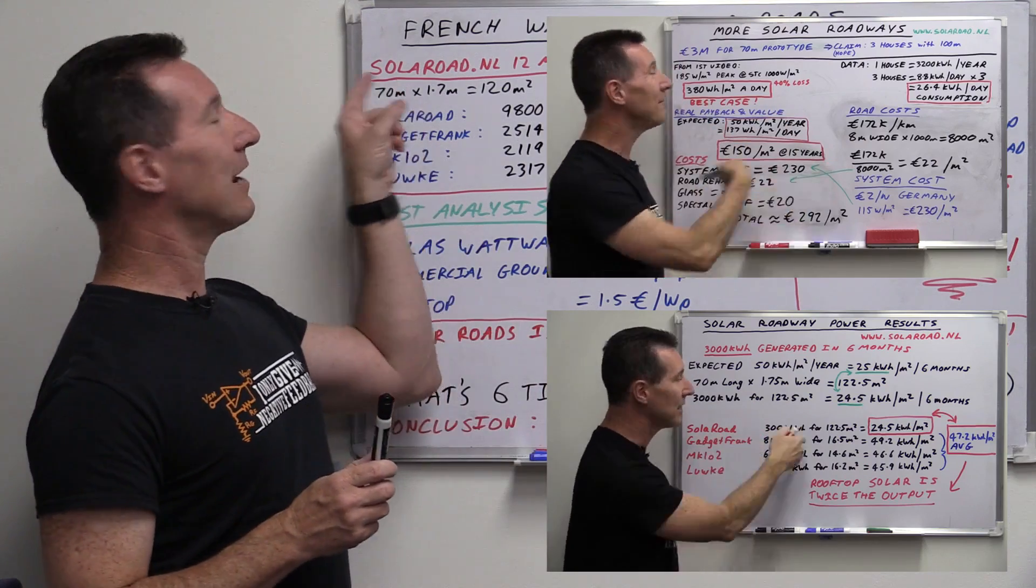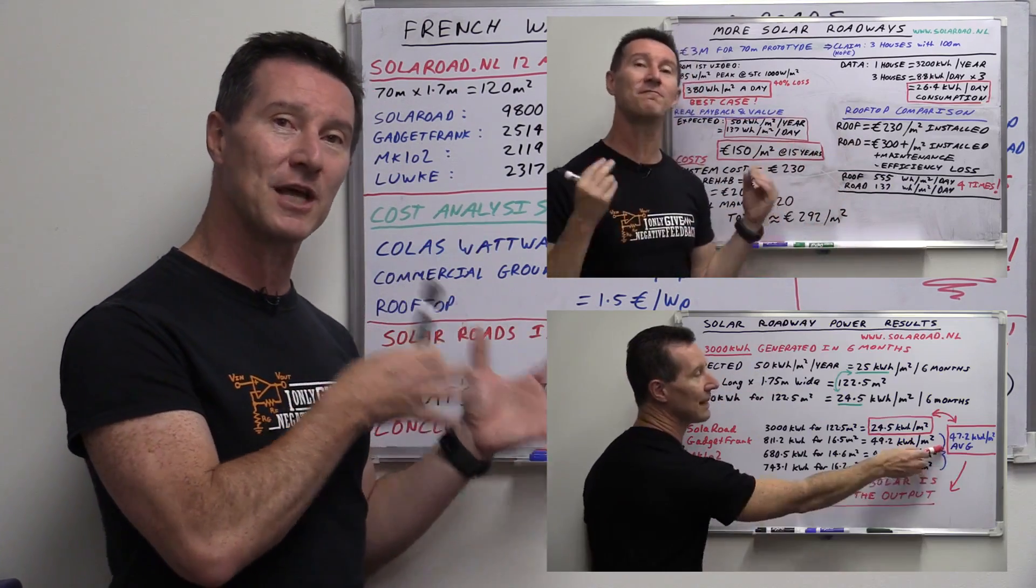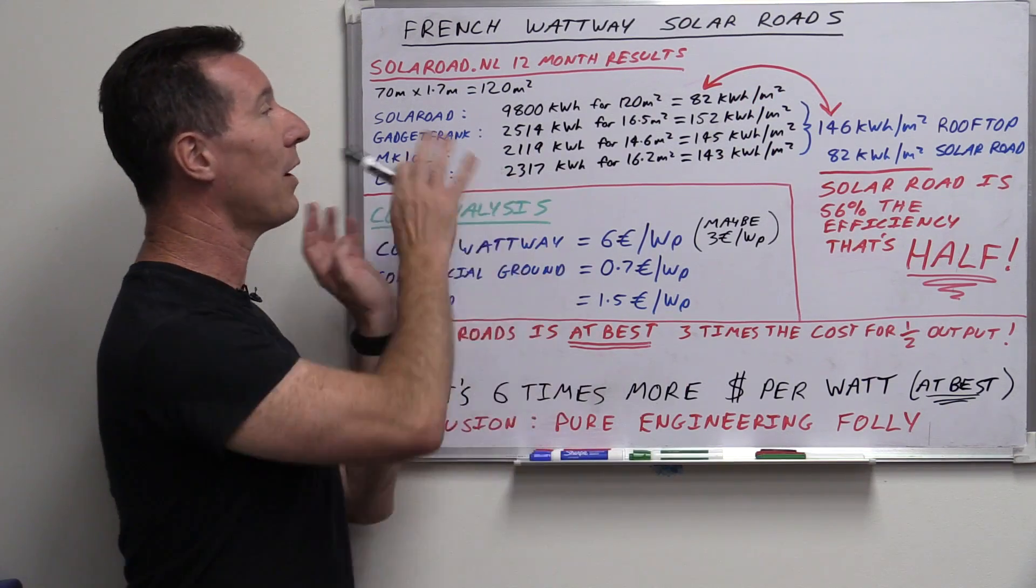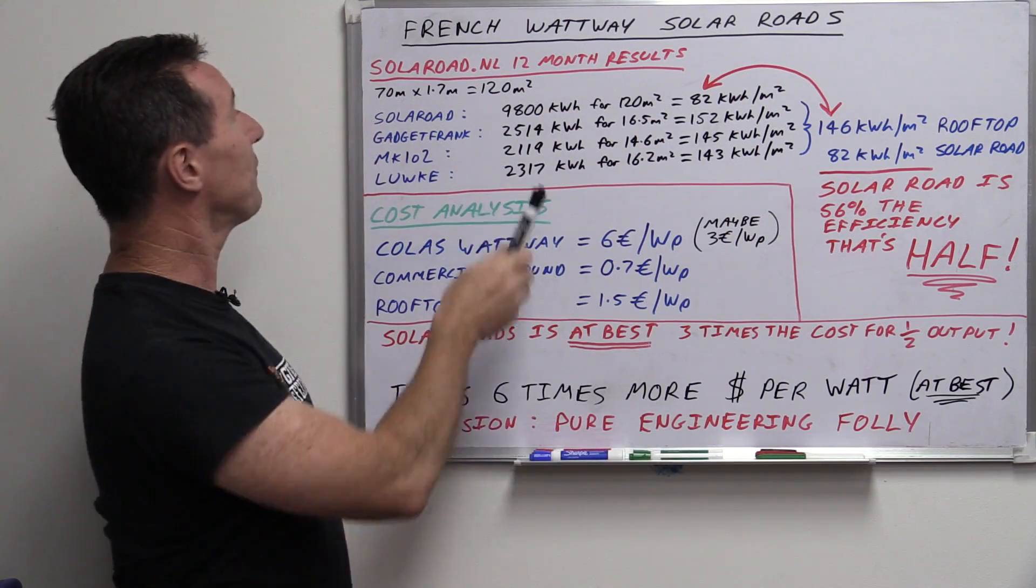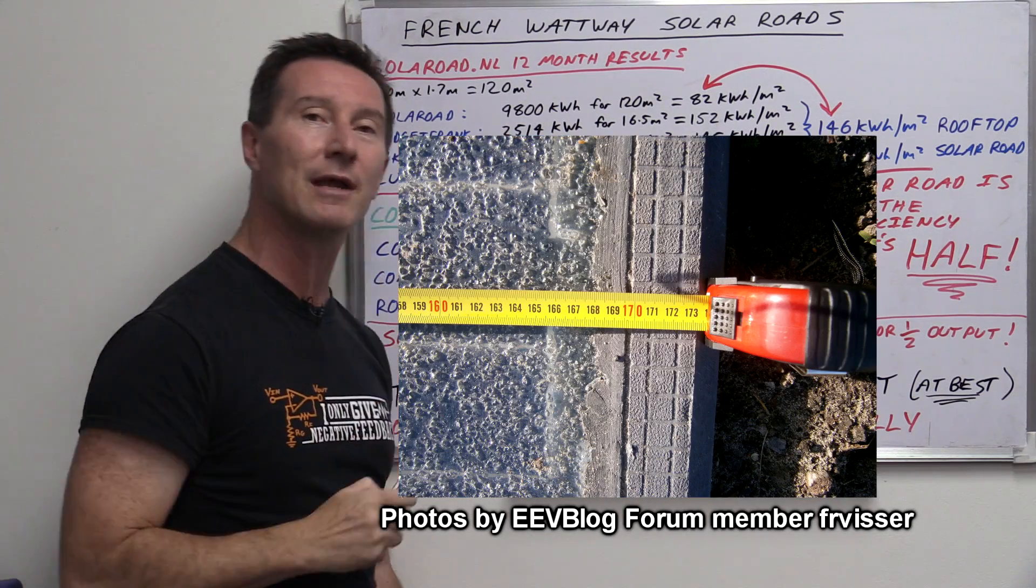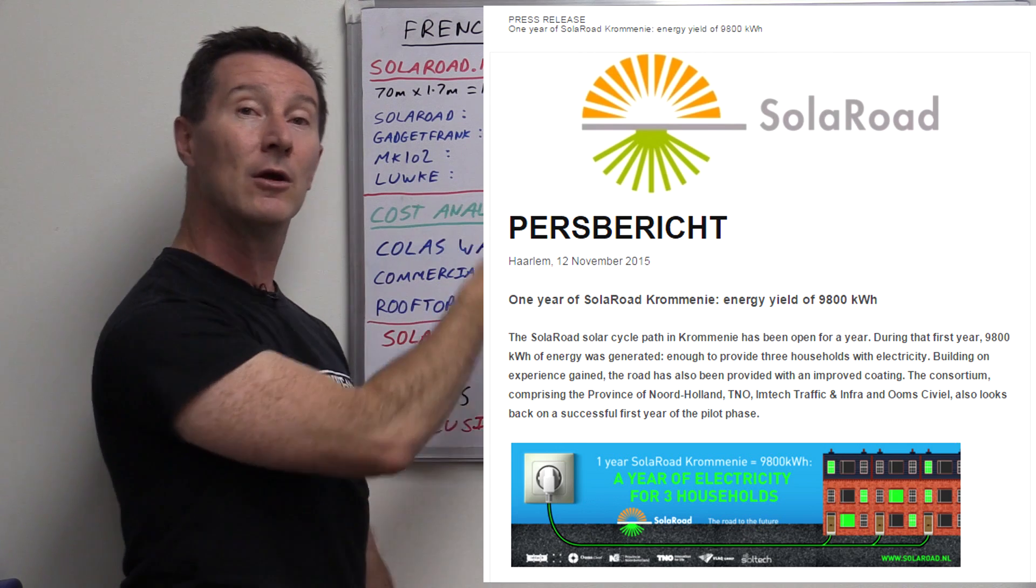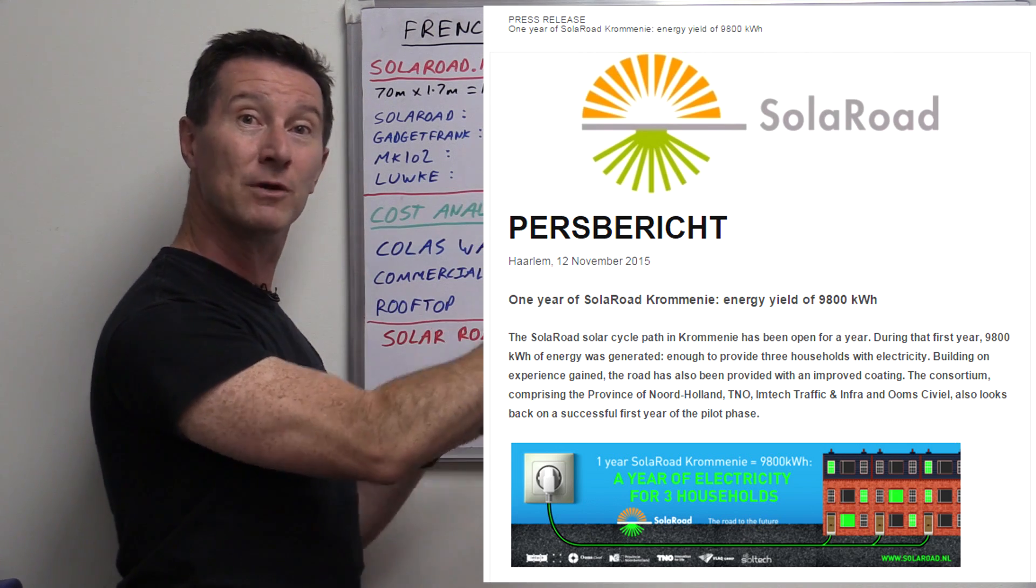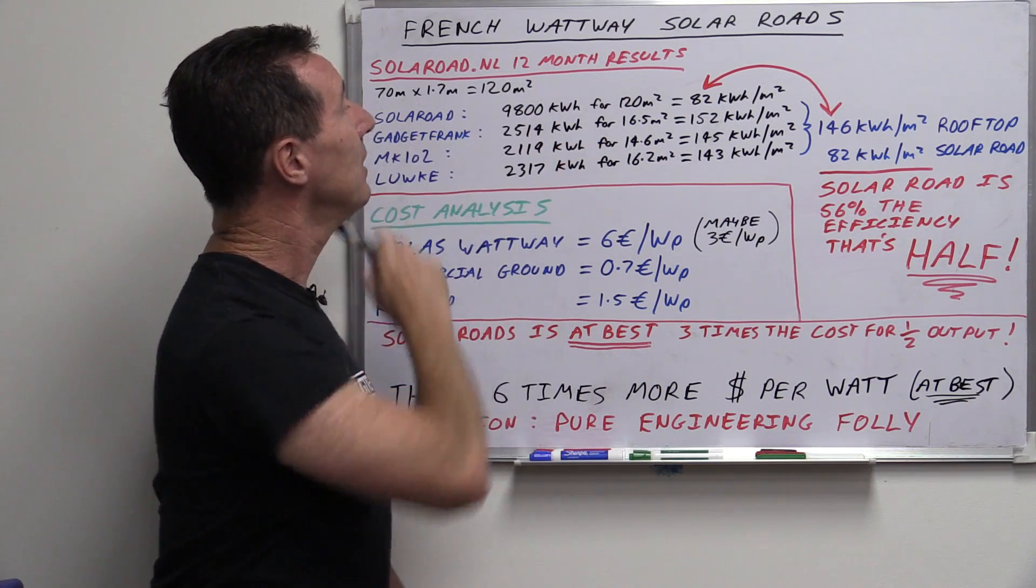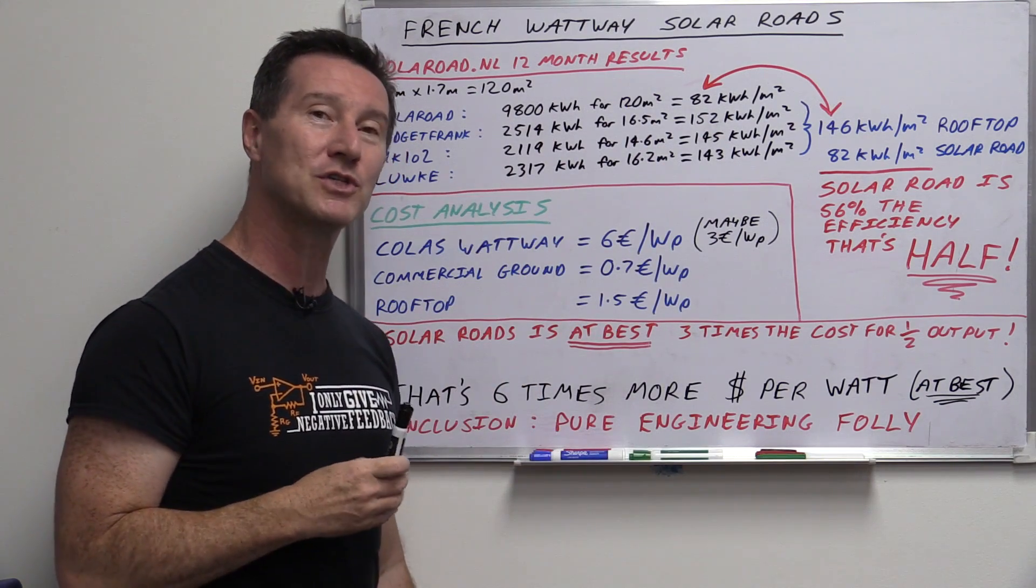Now we'll very quickly go back and just analyze the Netherlands project, the solarroad.nl one. We looked at the six-month test results, and some people said let's wait until we get 12 months. Well, we do have 12-month test results. The solar road project is a 70-meter strip by 1.7 meters for a total area of 120 square meters. They've said in a press release after one year, 9,800 kilowatt hours for that 120 square meters. That gives us 82 kilowatt hours per square meter.